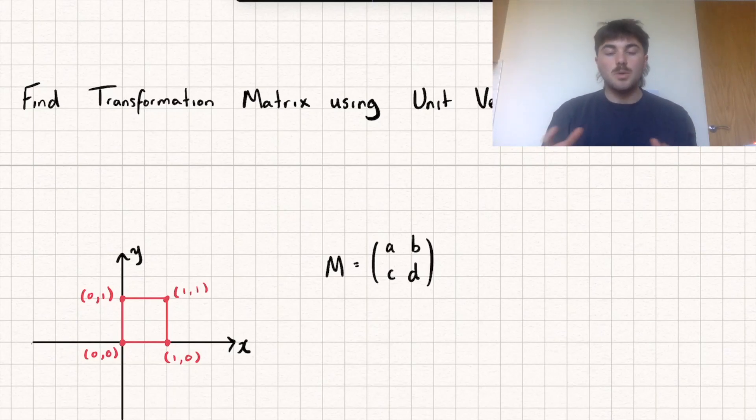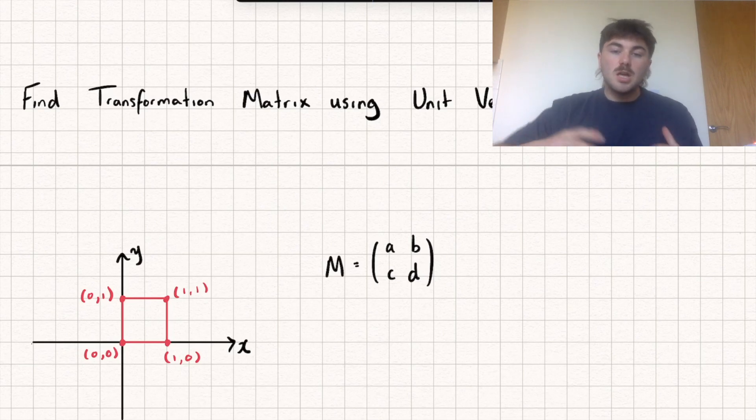Hello, in this video I'm going to be talking about how we can use the i and j unit vectors to help us find a given transformation matrix. I'll timestamp the different parts of the video below, but to start off with we'll look at how this works and then in the second part we'll look at an example too. So if this is useful please do like and subscribe.